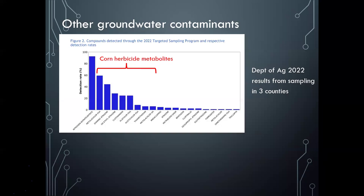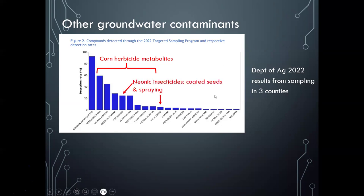Nitrate isn't the only groundwater contaminant. A 2022 study by the Department of Agriculture looking at three counties found that corn herbicide metabolites — weed killers — are detected in a high percentage of wells. Corn is Wisconsin's number one crop, grown on 4 million acres, so finding herbicides is not surprising. Neonic insecticides, often applied to corn and soybean seeds, as well as sprayed on crops, are also being found in groundwater.